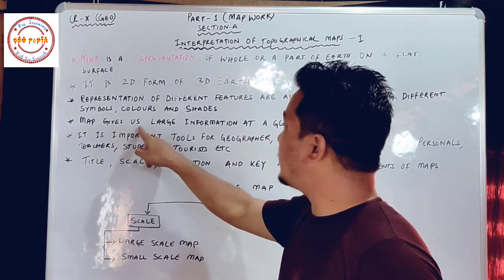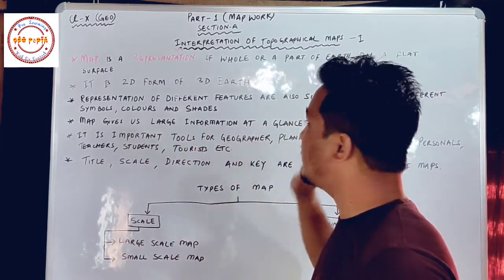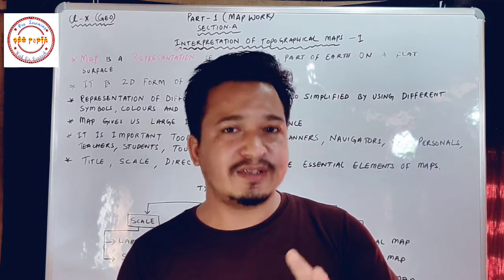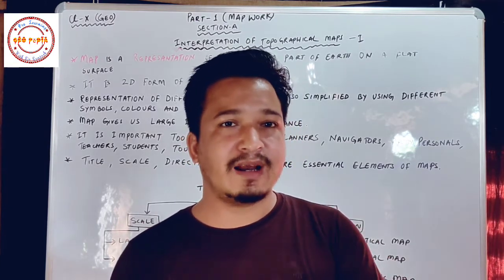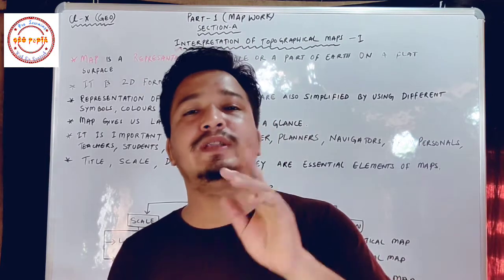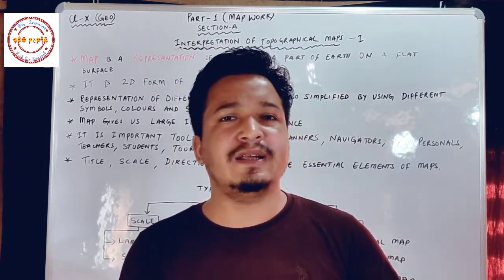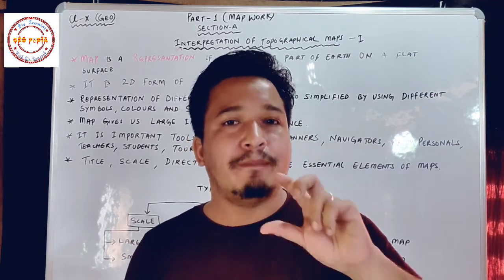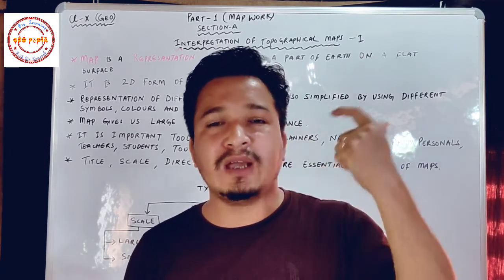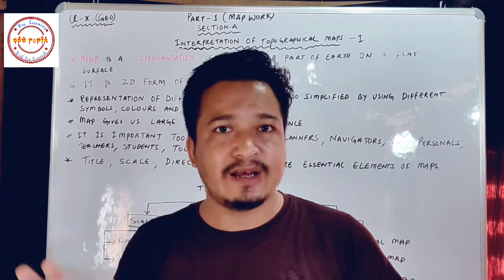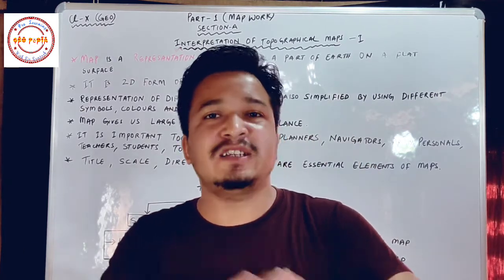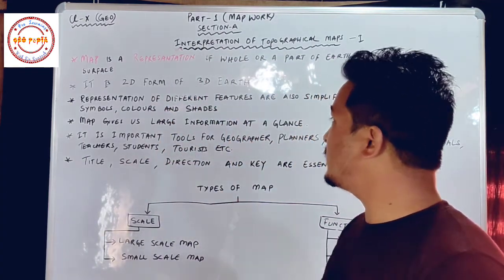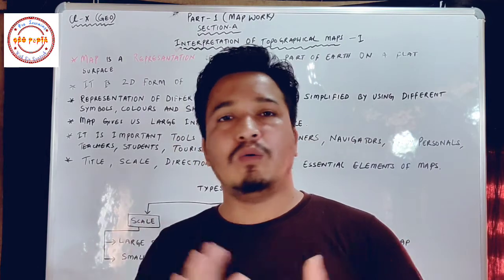Map gives us large information at a glance. A map is a representation of the earth's surface on a flat paper, and it is very informative. It contains a lot of information, and we can understand maps and get large amounts of information by looking at them just once — at a glance.